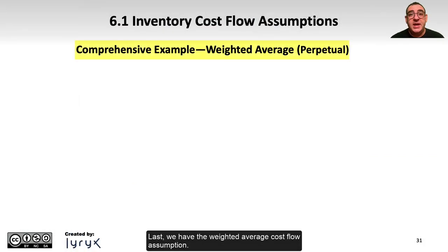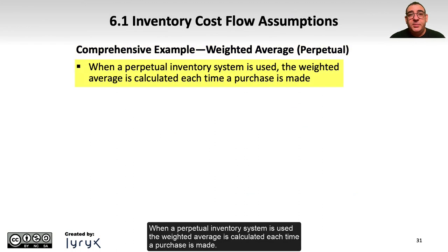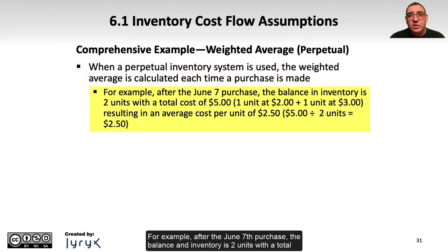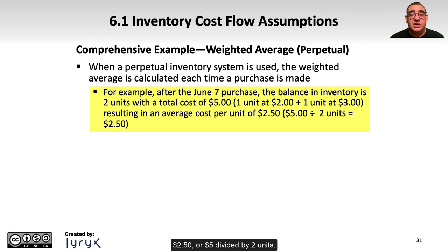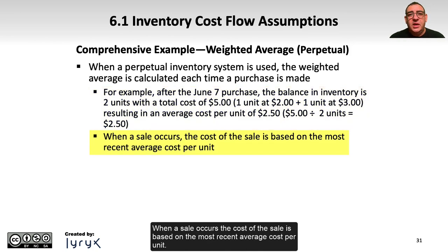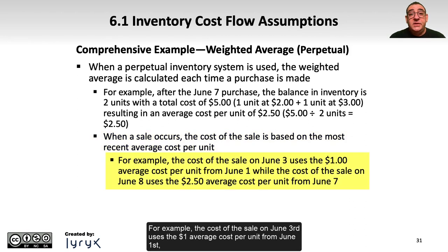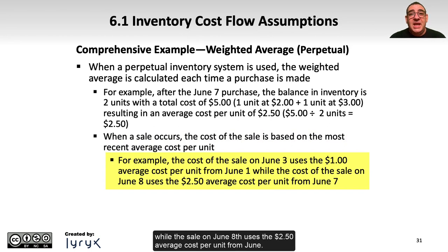Last, we have the weighted average cost flow assumption. When a perpetual inventory system is used, the weighted average is calculated each time a purchase is made. For example, after the June 7th purchase, the balance in inventory is two units with a total cost of $5 — one unit at $2 plus one unit at $3 — resulting in an average cost per unit of $2.50, or $5 divided by two units. When a sale occurs, the cost of the sale is based on the most recent average cost per unit. The sale on June 3rd uses the $1 average cost per unit from June 1st, while the sale on June 8th uses the $2.50 average cost per unit from June 7th.